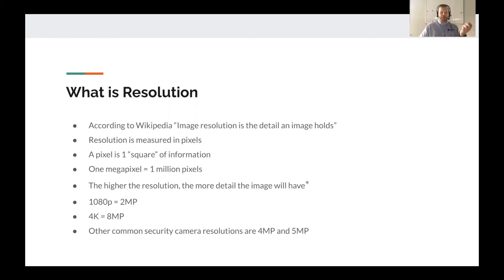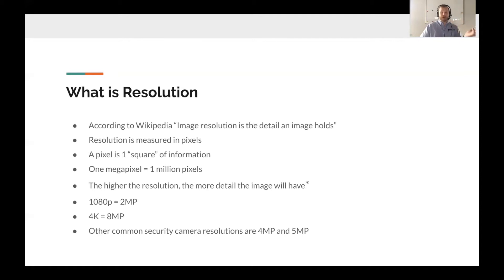A couple of terms you may see for resolution: 1080p, like your older TV, is two megapixels — two million pixels. Your newer 4K TV is actually eight megapixels. Some other common security camera resolutions are four megapixel, which is sort of the in-between, and five megapixel, which is also fairly common.